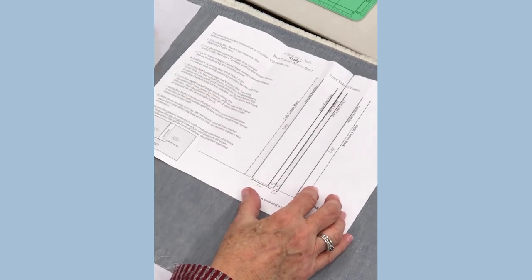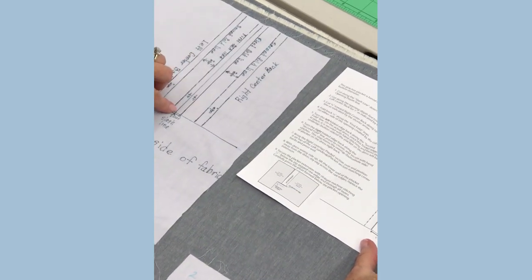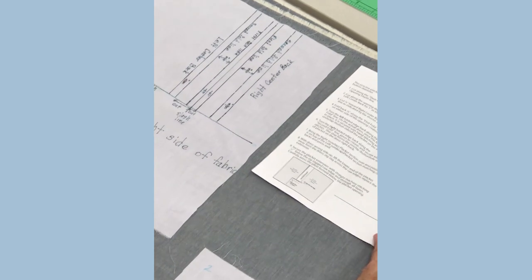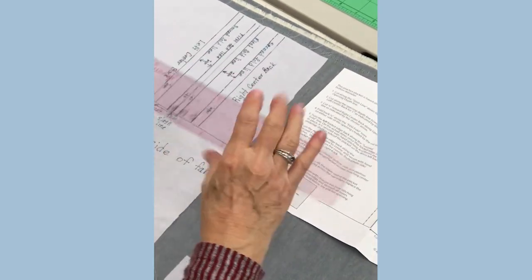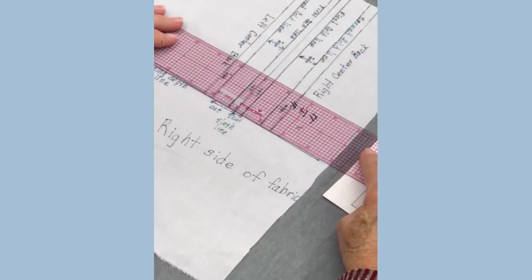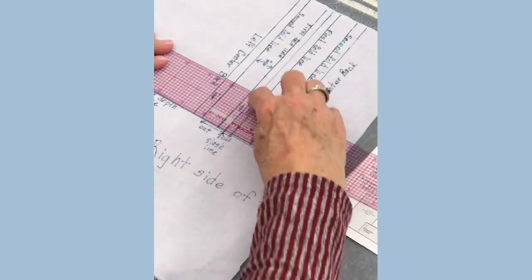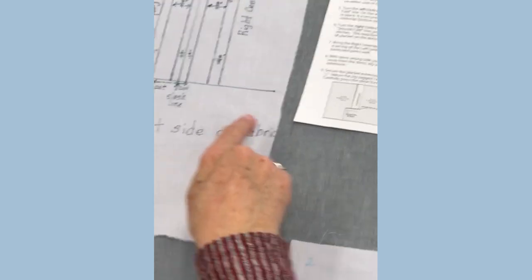After you draw this center back line on my fabric, I used a ruler like this one that has perpendicular lines. Then I lined up and drew a line perpendicular, got it on the line, and drew another line across the bottom perpendicular.